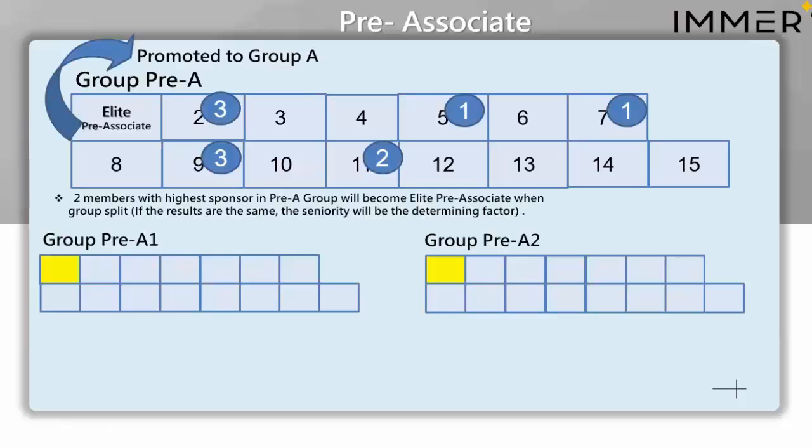So when the 15th person comes on board, the leader is then promoted. And when the leader is promoted, we are left with 14 people out of the 15 people. So the remaining 14 people are divided into two. That's why we have group Pre-A1 and group Pre-A2.